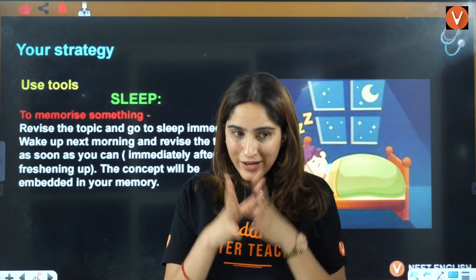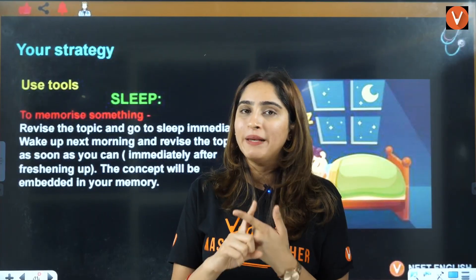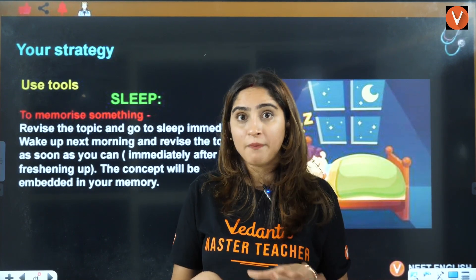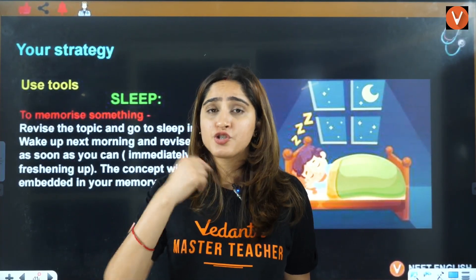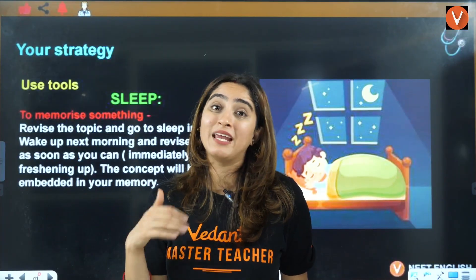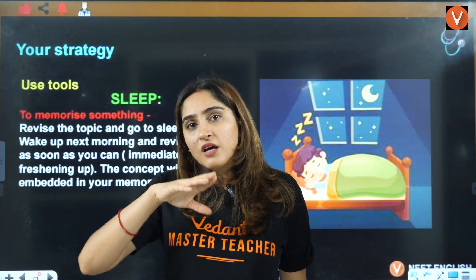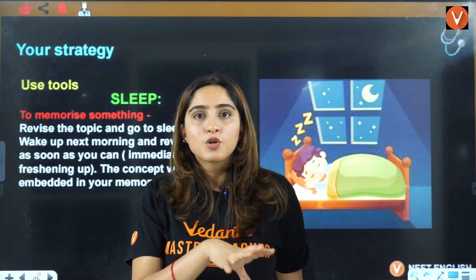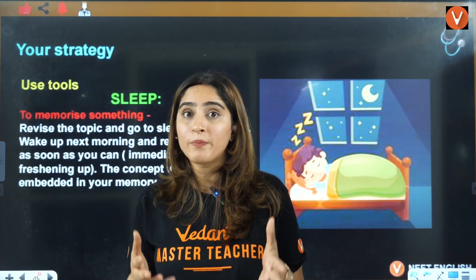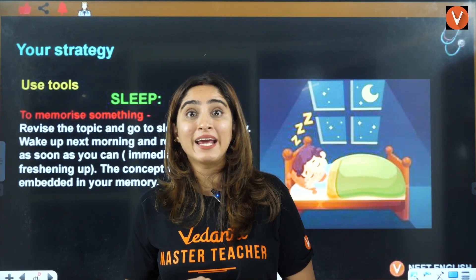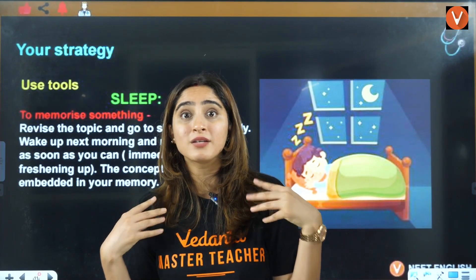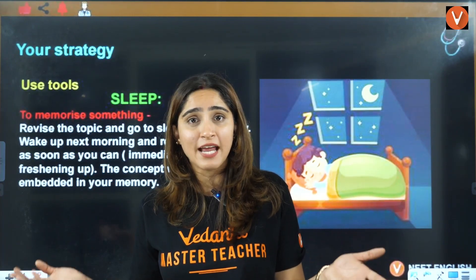To conclude: first, complete the backlogs of basic chapters until you can answer all previous year questions from those chapters. Then jump to chapters that are interlinked. Then start with your favorite ones, since interest makes it easier to study. Side by side, keep revising ongoing classes so they don't become new backlogs in two months. Set a target — for example, complete all backlogs by the end of October — and make a planner.